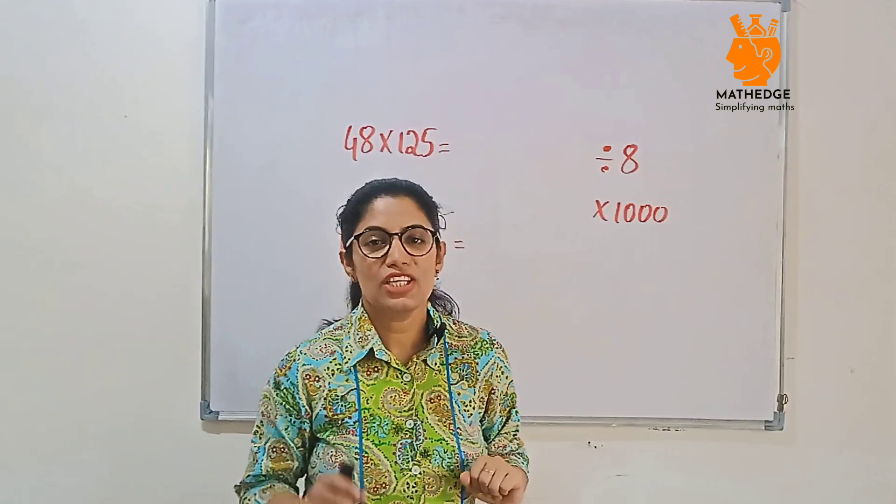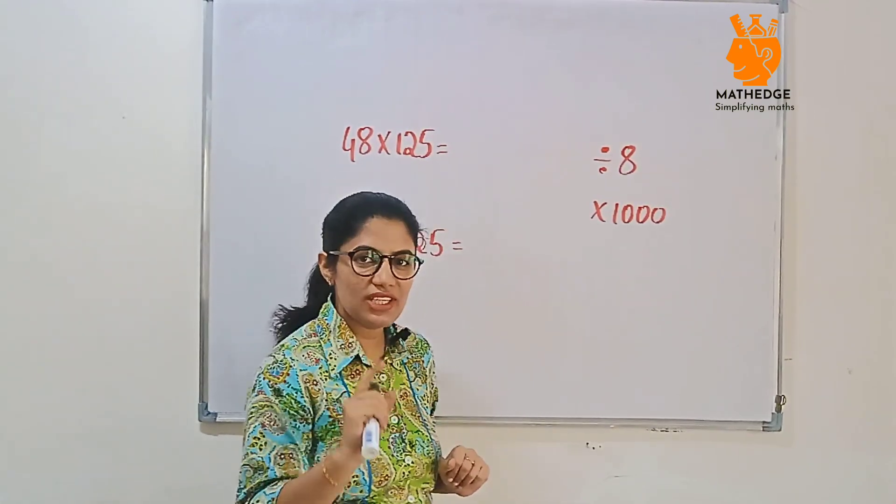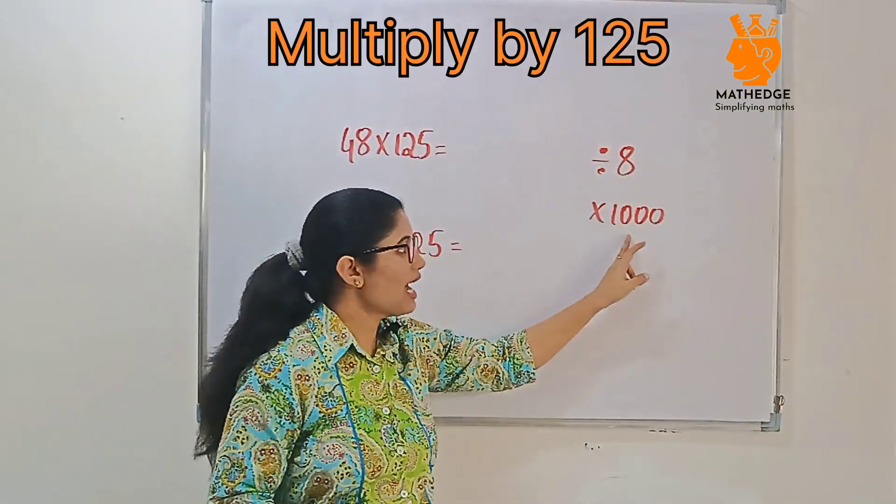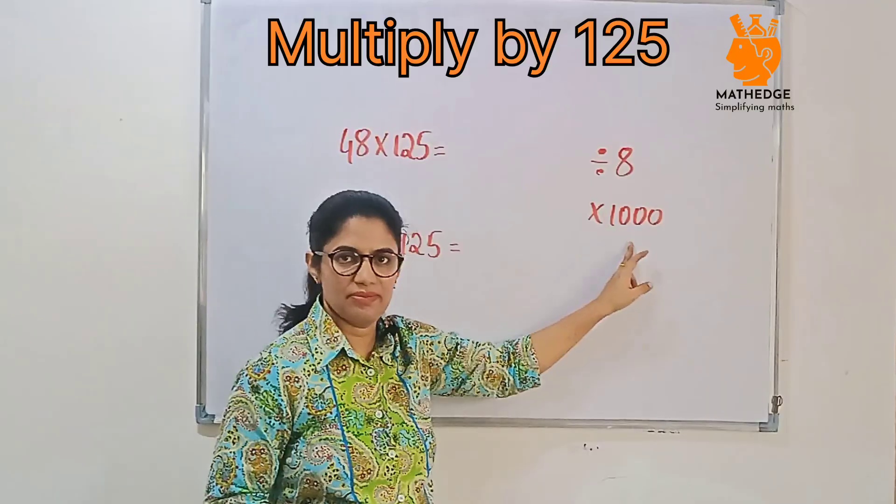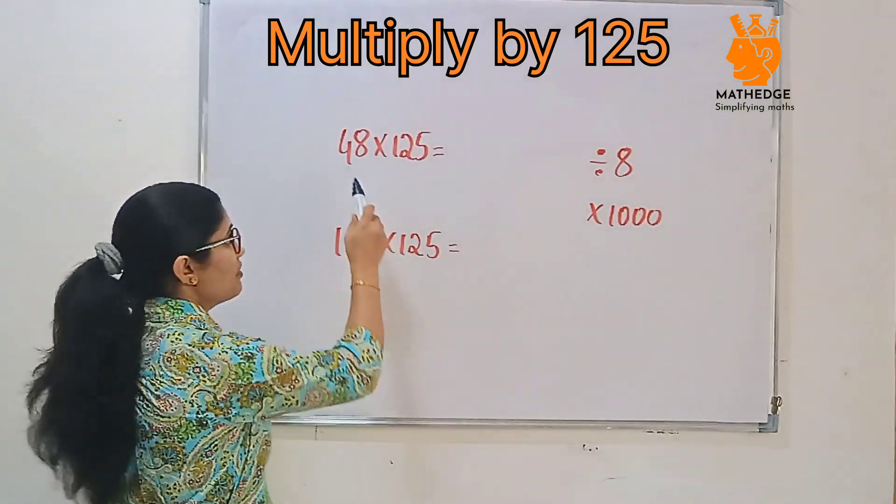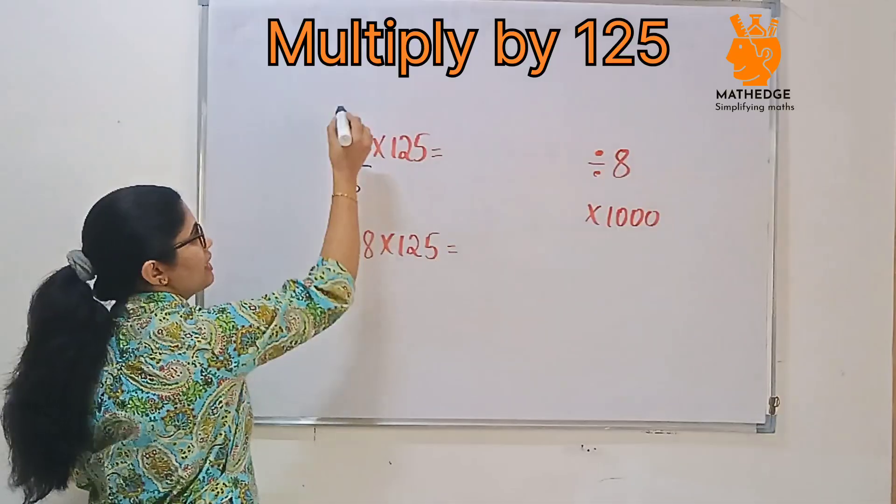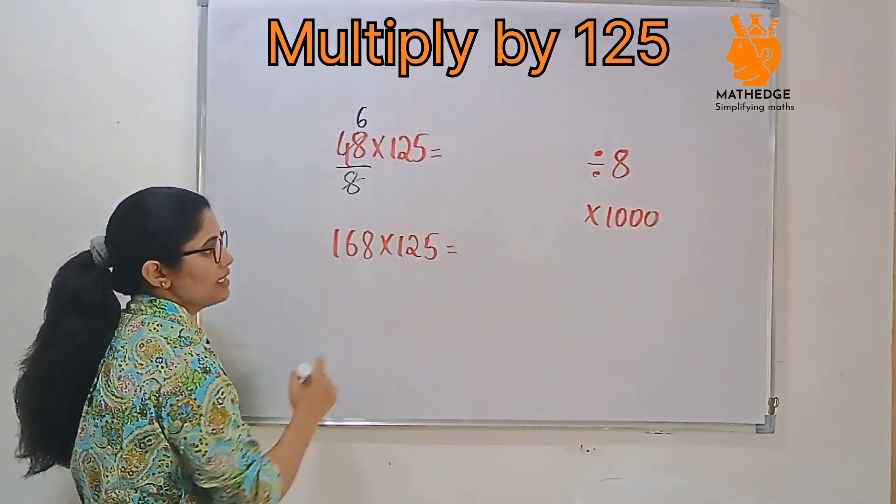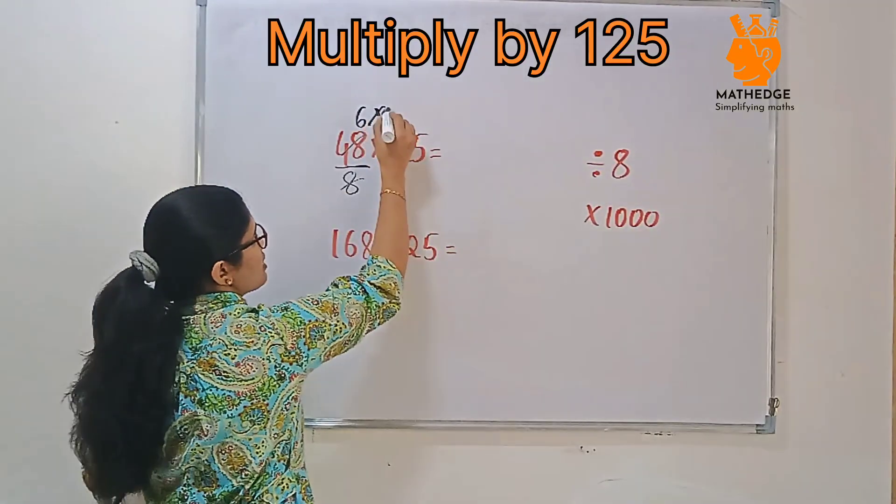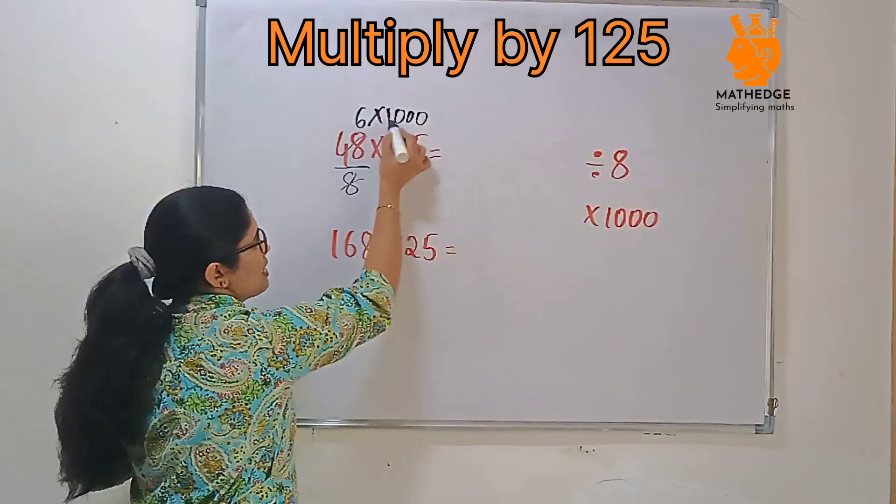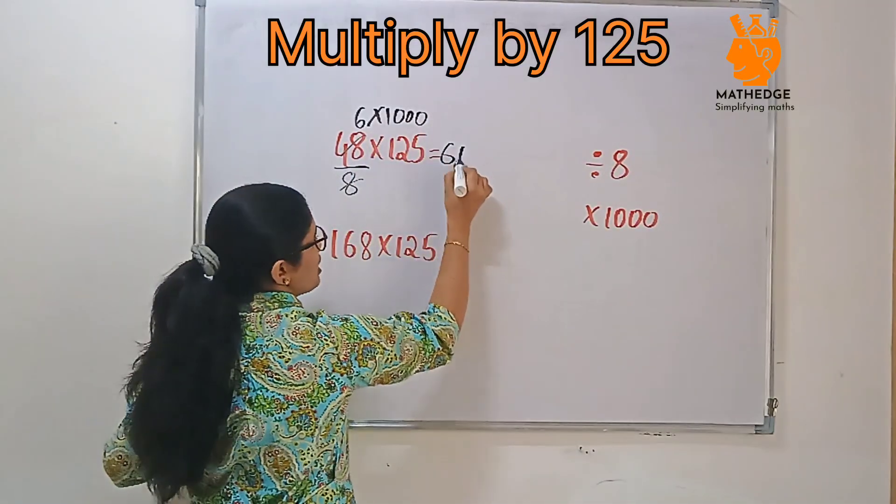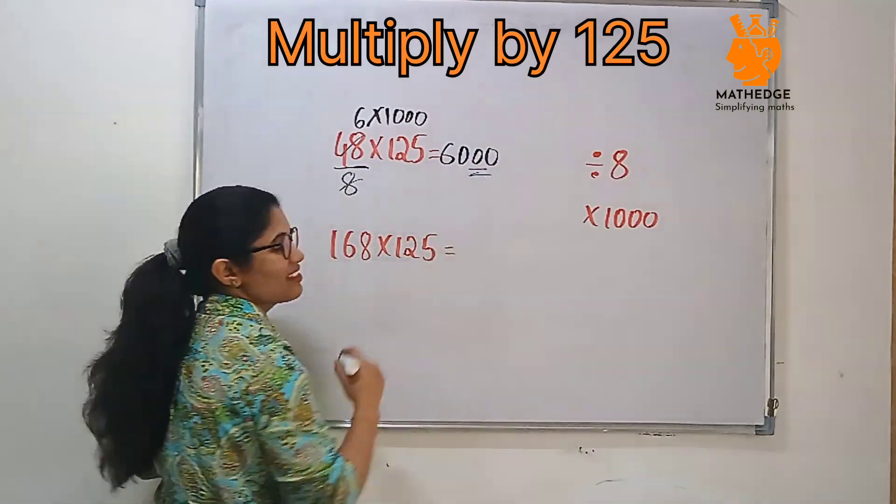Now, let's step it up. To multiply by 125, first step is, divide by 8 and then multiply by 1000. Right? See, if it is 48 by 125, first divide by 8. 8 ones, 8 sixes. Then multiply by 1000. 6 into 1000, 6 into 1 is 6, 3 zeros are there. Write the 3 zeros, 6000. Easy right?